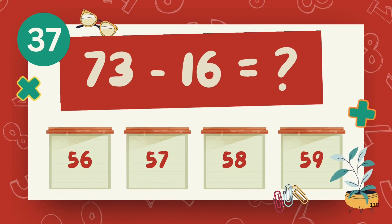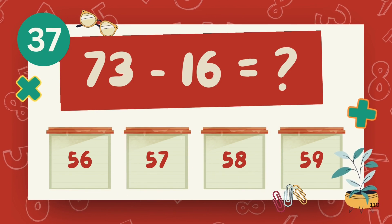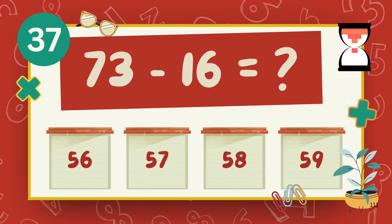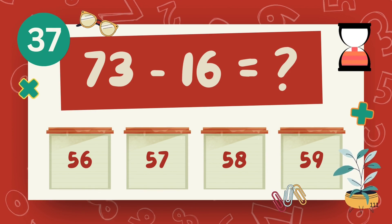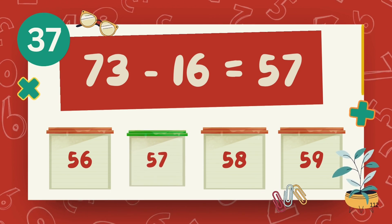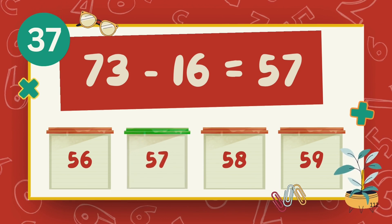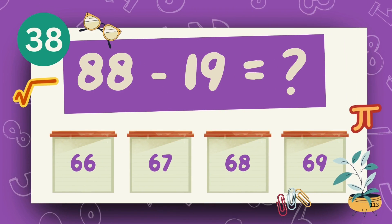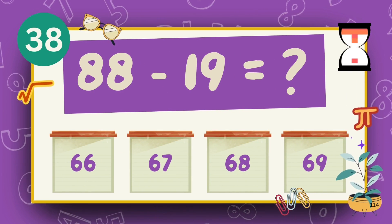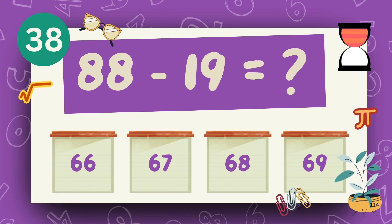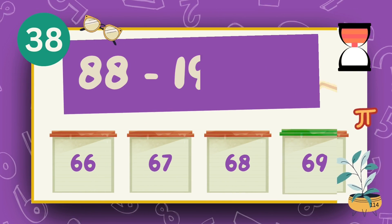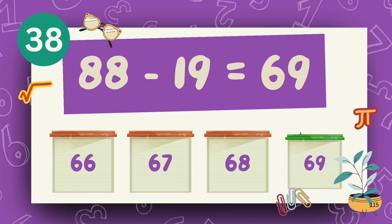What is 81 minus 16? The answer is 67. What is 88 minus 19? The answer is 69.